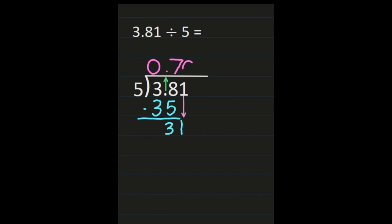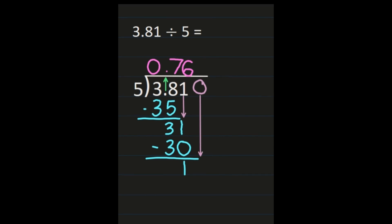31 divided by 5 is 6. The 6 goes on top of the 1 since that's the number I just brought down. 6 times 5 is 30 — so I've divided, I've multiplied, I need to subtract. 31 minus 30 is 1. I don't have anything else to bring down, but I have the 1 here. Because you're working with decimals, we're not putting remainder 1 — we are going to add a 0 to our 3 and 81 hundredths. We're at the end behind the decimal, so it's not changing any values. Now I have a number I can bring down. 10 divided by 5 is 2, and 2 times 5 is 10. When I subtract, I get 0, and I have nothing else to bring down.